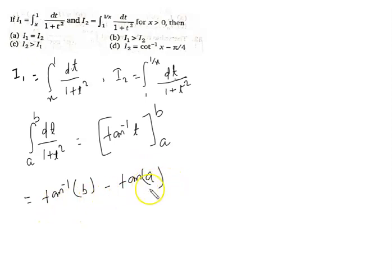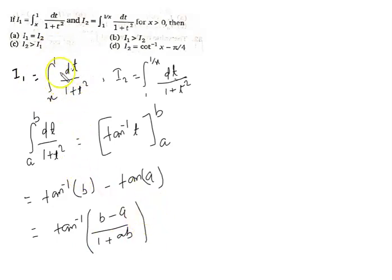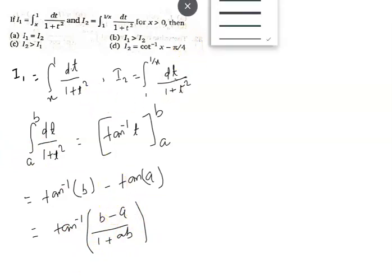We can apply the formula: tan inverse b minus tan inverse a equals tan inverse of (b minus a) divided by (1 plus ab). This is the general form, and now we have to put only the limits of the given integrals.